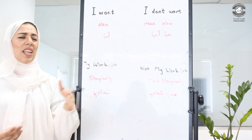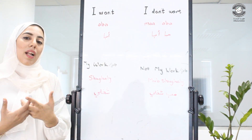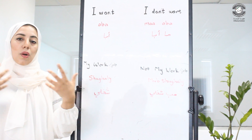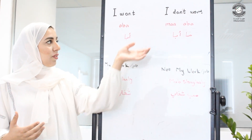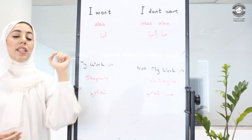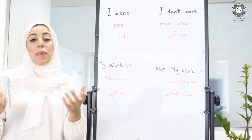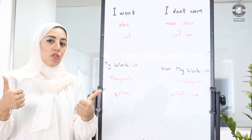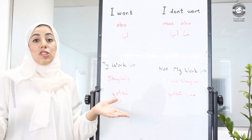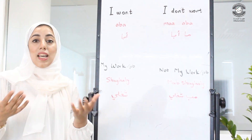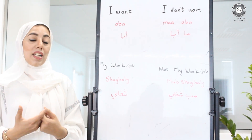In Emirati dialect, we try to combine words and say them really fast, so instead of saying 'ma Abba' separately, we say 'Maba'. But saying 'ma Abba' is also correct. For example: 'ma Abba chai' means 'I don't want tea', and 'ma Abba sayyara' means 'I don't want a car'.